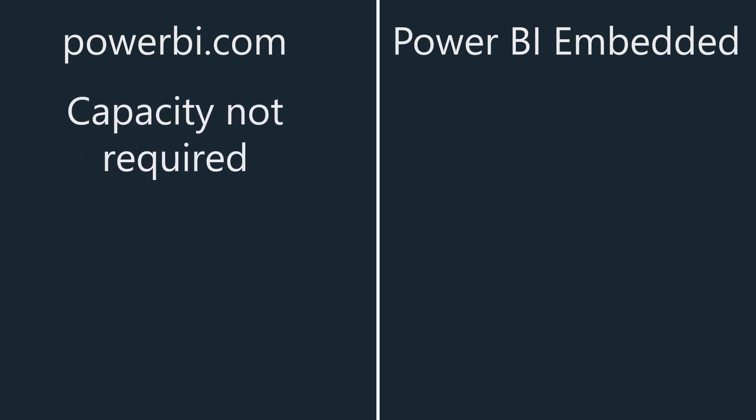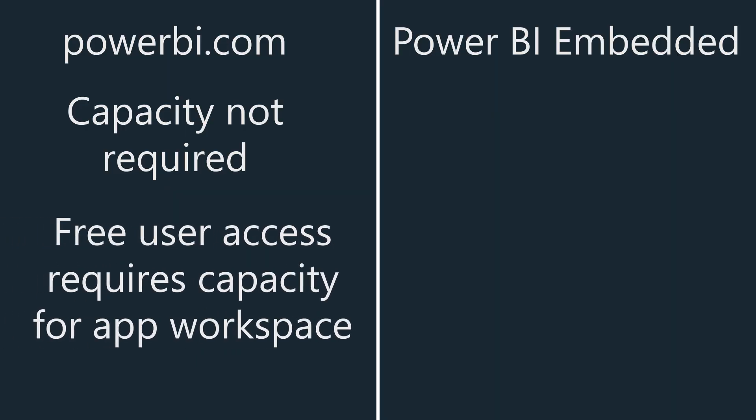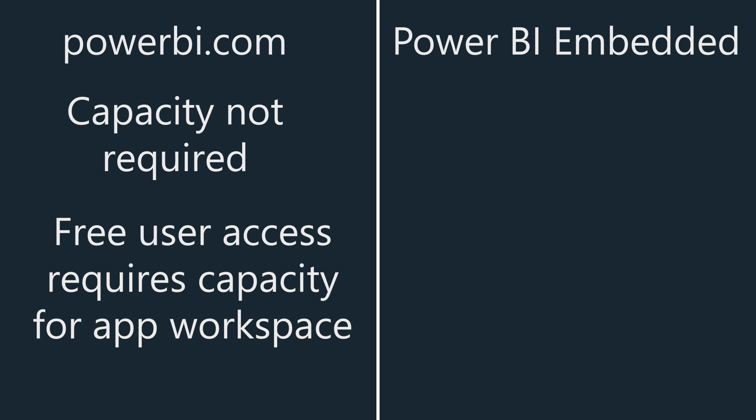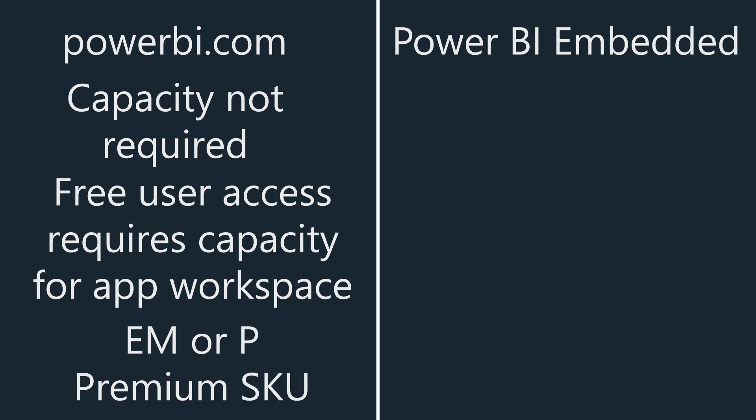For Power BI.com, you don't necessarily need capacity to move to production. If all of your users are Pro users, you're good to go. If you also want to allow free users to interact with the content, that's when capacity is required — you have to back that workspace with premium capacity. Free users also have to be added as members of the app workspace to have permissions. On the Power BI.com side, the capacity must be a premium capacity — an EM SKU or P SKU. You cannot use an Azure SKU from Power BI Embedded when embedding for Power BI.com.